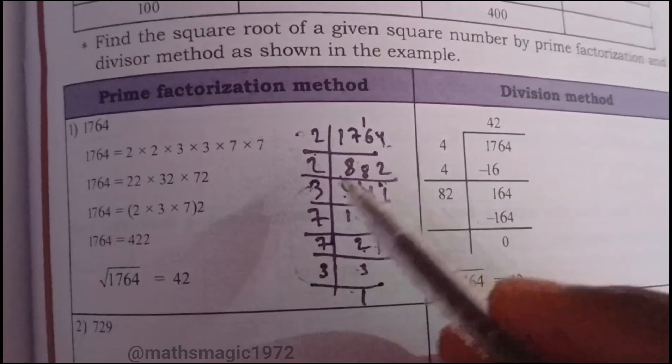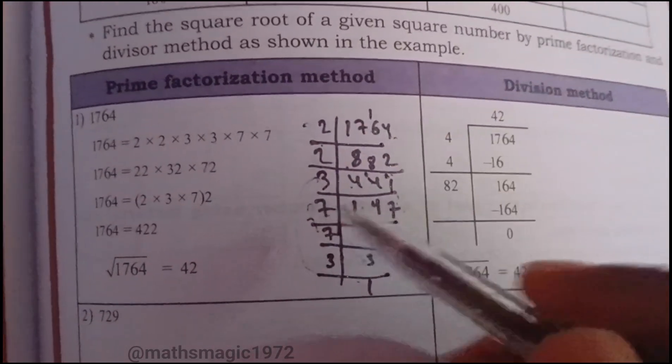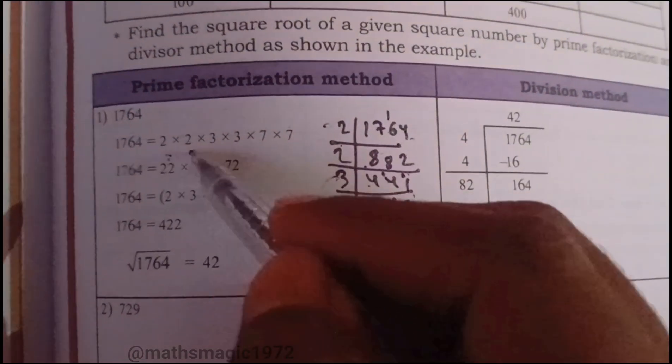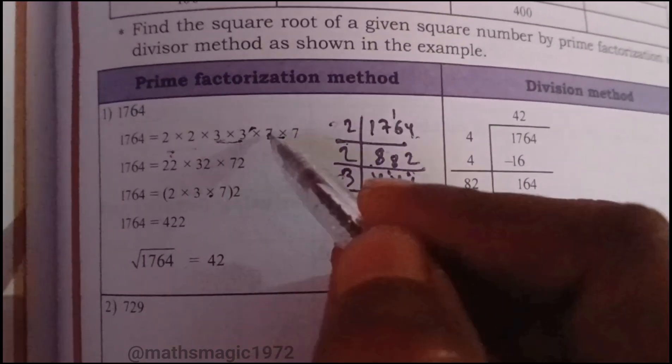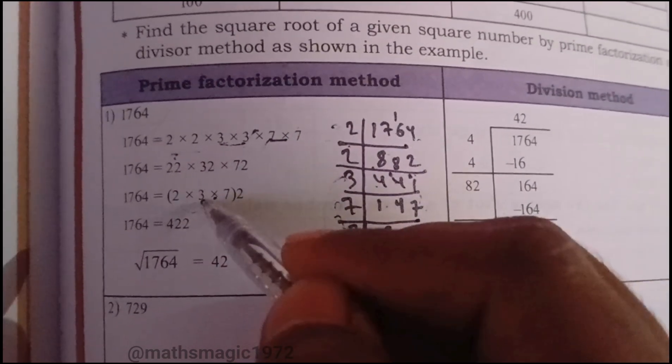We have pairs of 2, 3, and 7. Taking one from each pair: 2 times 3 is 6, 6 times 7 is 42.